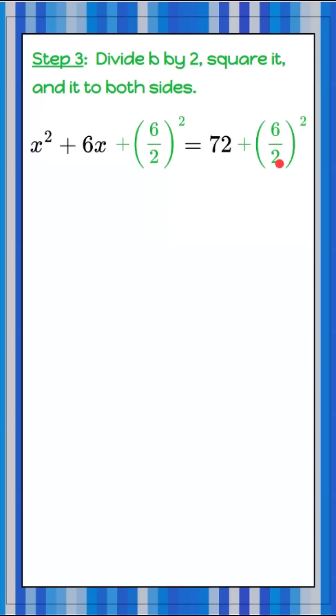What I do to one side, I must do to the other. 6 divided by 2 is 3, 3 squared is 9. So let's rewrite that: x squared add 6x add 9 is equal to 81. 72 add 9 is 81.